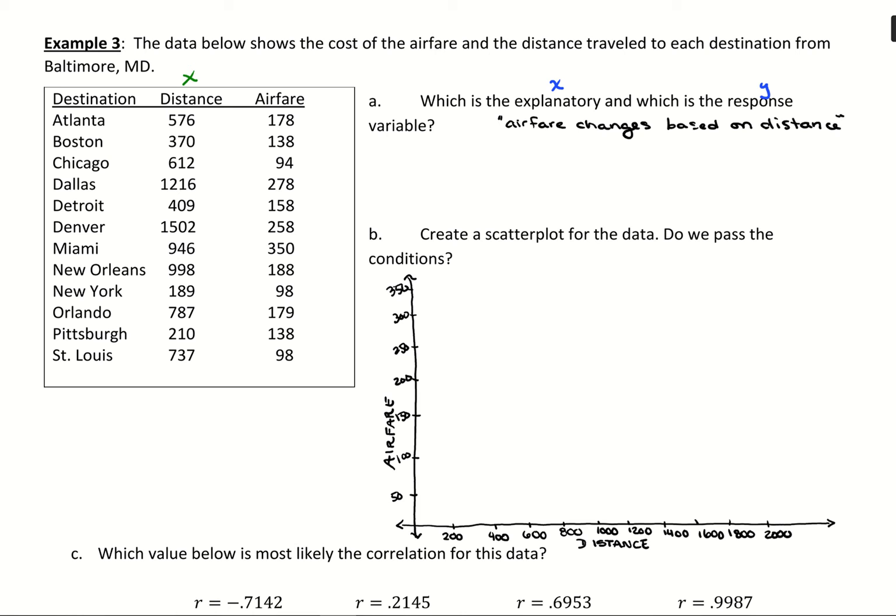Distance is going to be our x because it'll be operating independently, but airfare can change based on the airline. What we're going to look for in this data is are they increasing airfare with the farther that they're traveling. For our explanatory variable, that will be distance, and for our response variable, that will be airfare.